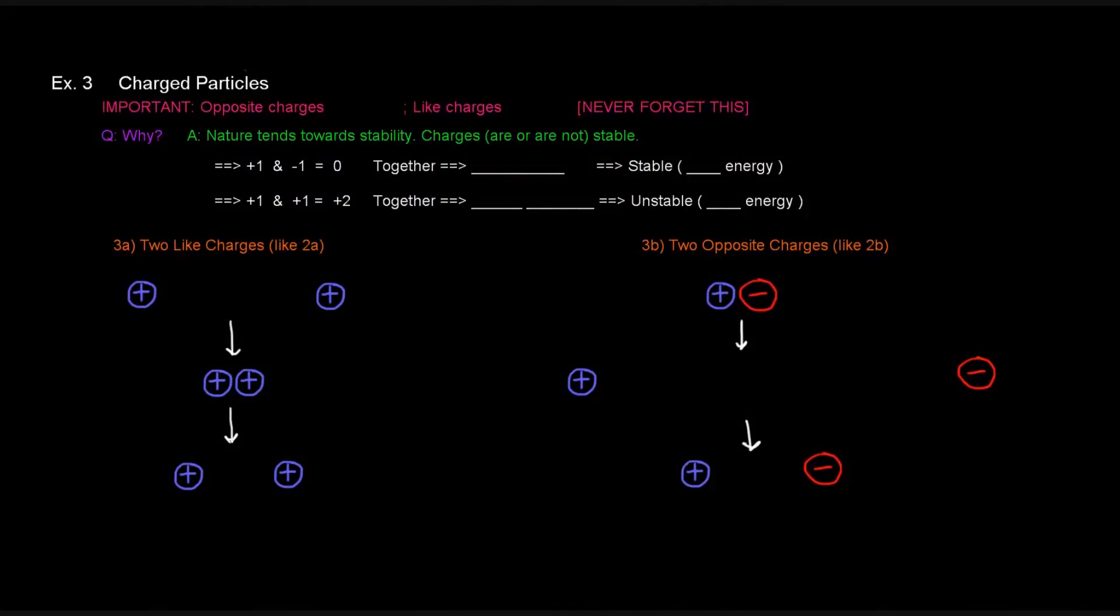So here, something that we have to know about charged particles before we really discuss them is this important simple fact that opposite charges attract and like charges repel. And you should never, ever forget this. Do not forget this. Opposite charges attract and like charges repel. And you might think, why is this? Why is it that opposite charges attract and like charges repel? Well, the answer is, again, that nature tends towards stability. And charges naturally are not stable. Things like to be neutral. Neutrality is stable.